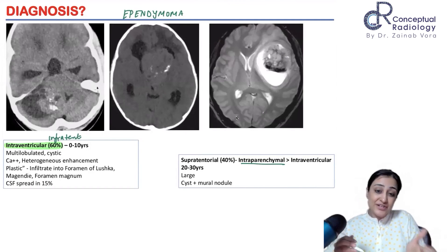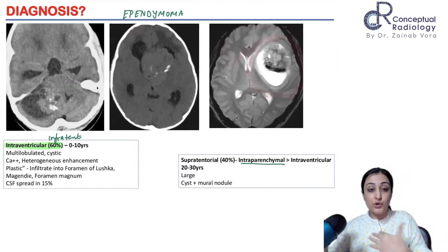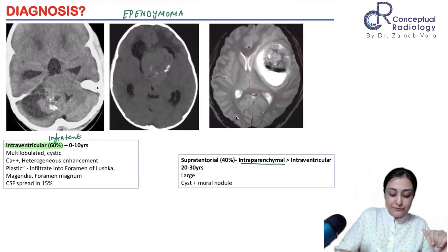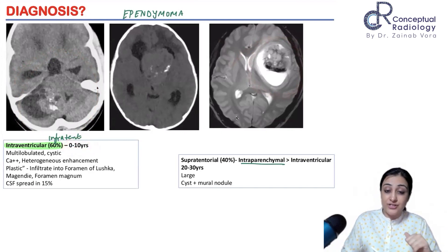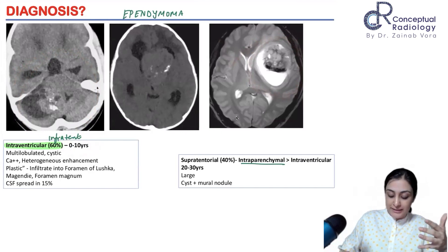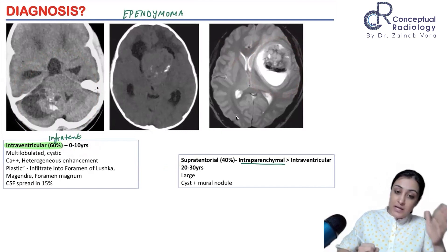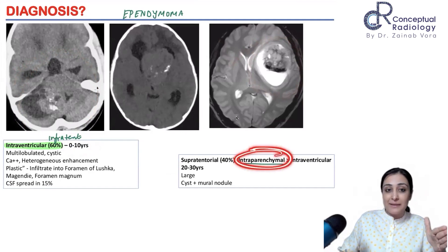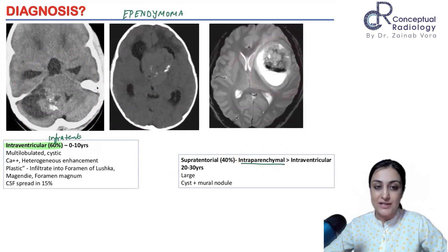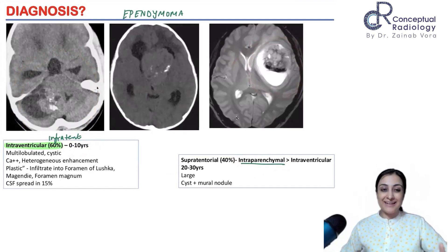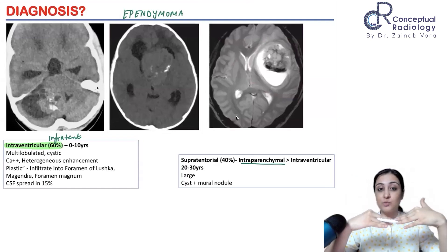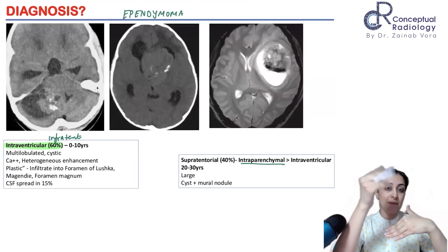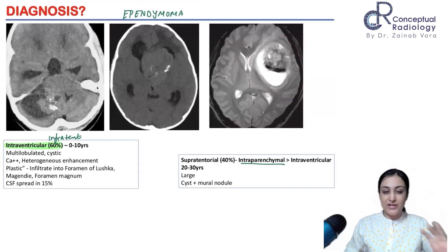The age group also differs: infratentorial intraventricular tumors occur in young children under 10 years, in the first decade of life, whereas supratentorial lesions are more commonly seen in young adults. Intraparenchymal supratentorial types can also be seen in young children. The key takeaway is that intraventricular ependymomas — the infratentorial ones — are more common in younger kids, while supratentorial intraventricular types are more common in older patients.